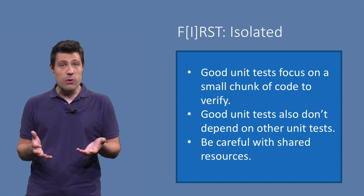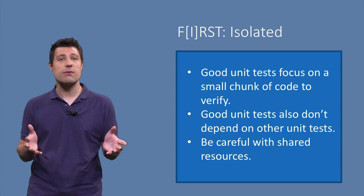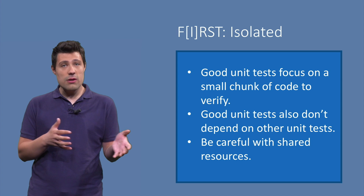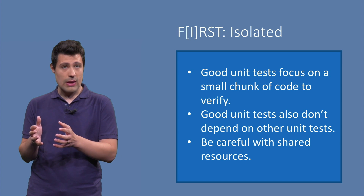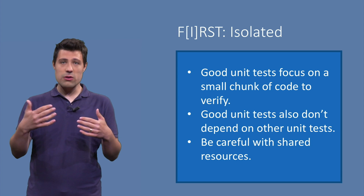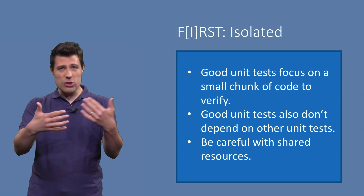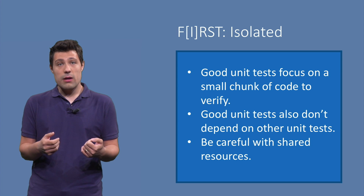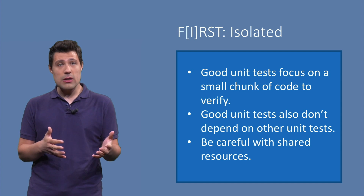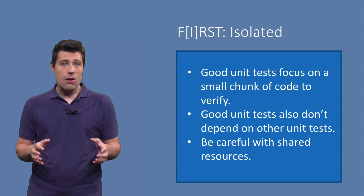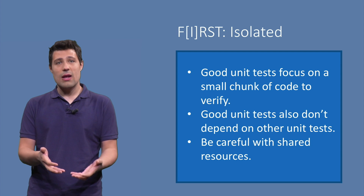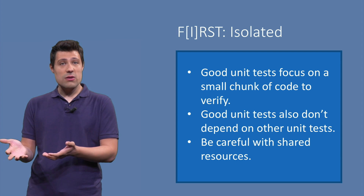I stands for isolated. When we write a test, we want it to be isolated in different perspectives. The first one is in terms of what it tests — we want our test to test an isolated piece of functionality. Good unit tests usually focus on small chunks of code. Good unit tests are also isolated from the other tests in our test suite. We don't want to write a test that depends on another test, so that we have some sort of strange execution ordering required for the test suite to work. Tests should be isolated from each other, and for that you need to be careful with any shared resources. For example, if you're using the same database in different tests, you need to make sure that each test puts its own data in the database and then cleans the data afterwards so that what happens in one test doesn't affect the next.